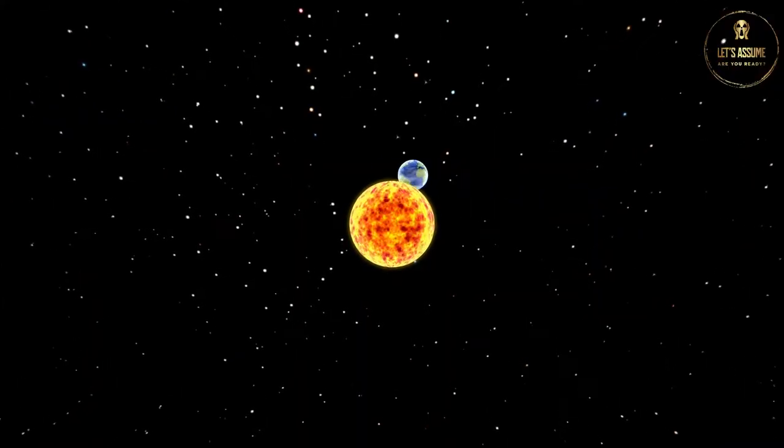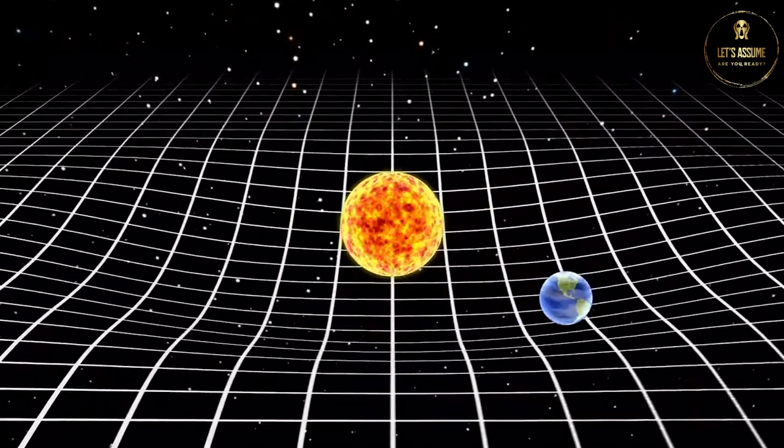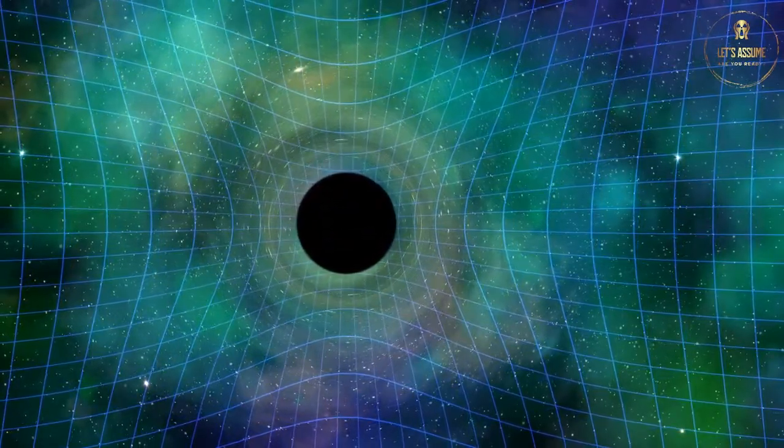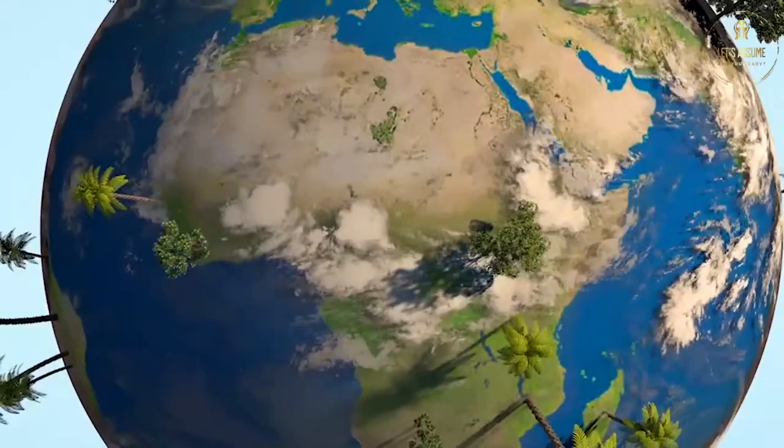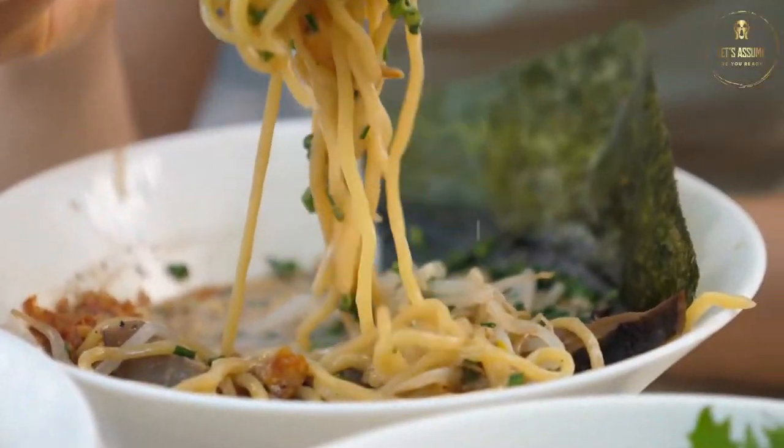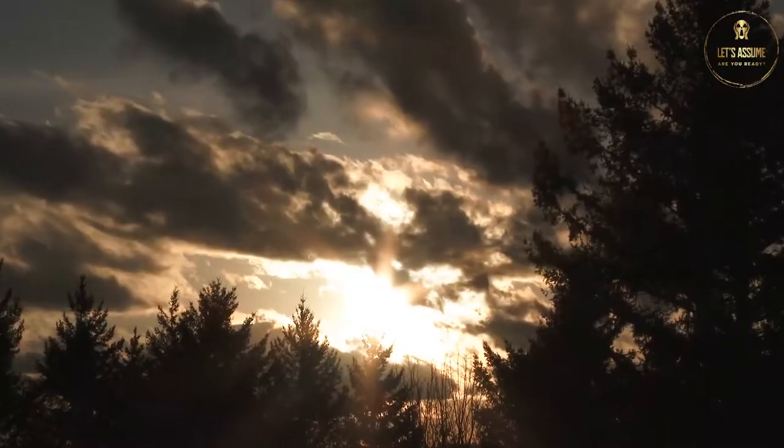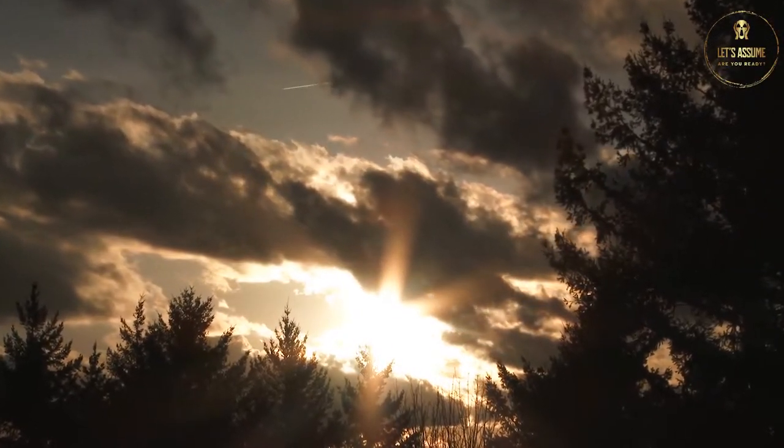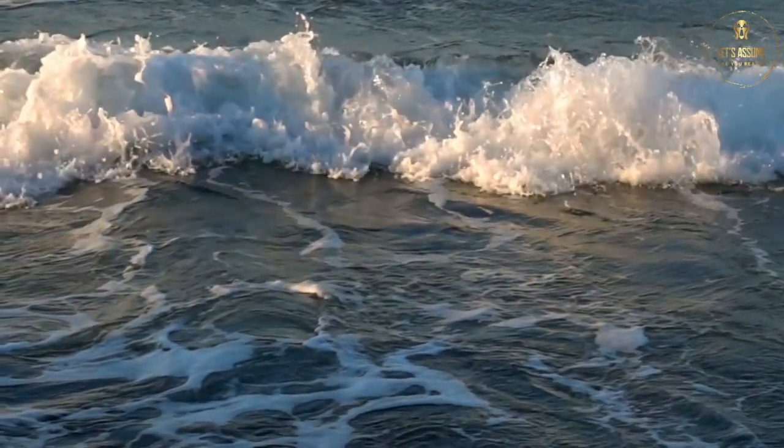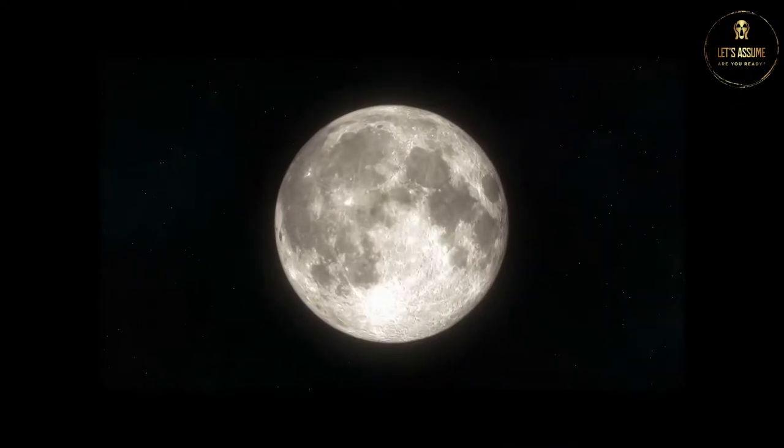Odds are that we'd notice a shift in gravity, as the Earth would begin moving much quicker than usual. Given that we'd enter into a new, stronger gravitational pull than that of the sun, everything on Earth would drastically change before anything turns into long string noodles. For example, there wouldn't be much sunlight, if any at all. And there'd be no concept of waves or tides in the sea, because the moon no longer appears either.